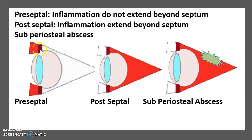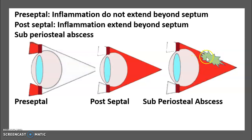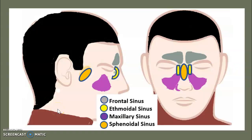Any inflammation that does not extend beyond this septum is preseptal. Post-septal, on the other hand, is when inflammation extends beyond the septum. If there is an abscess, it would be a subperiosteal abscess. Periorbital cellulitis is inflammation of the eyelid anterior to the orbital septum, often caused by sinusitis.